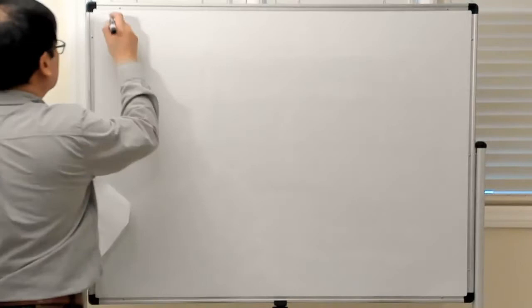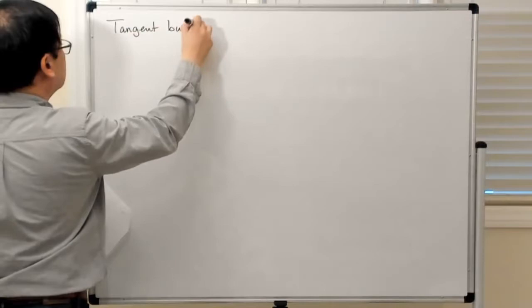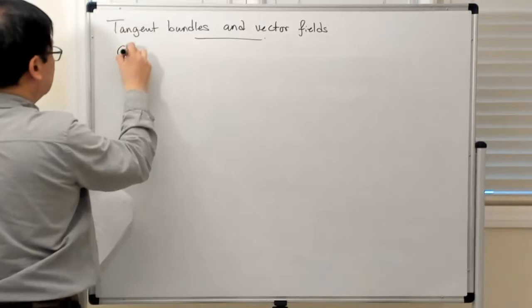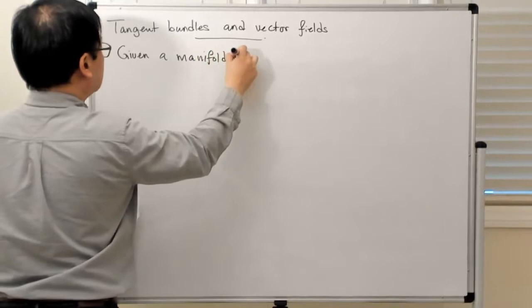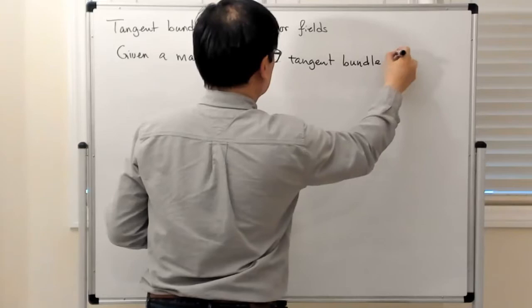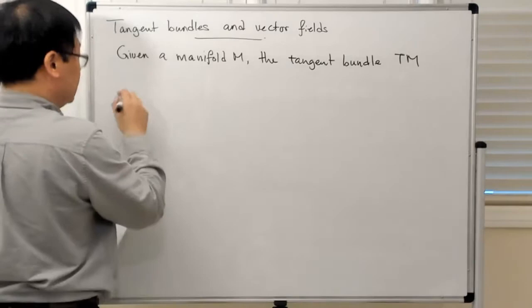Now I'm going to talk about tangent bundles and vector fields. Given a manifold M, I defined the tangent bundle, which is denoted by TM, as the set of all tangent vectors to M.